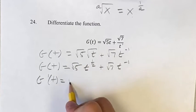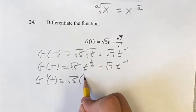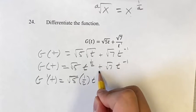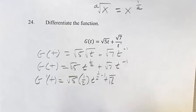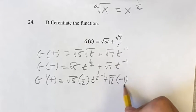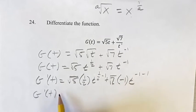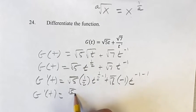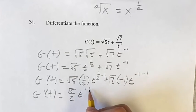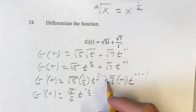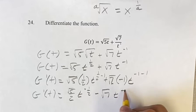Square root of 5 is just a coefficient, we leave that out front, bring the exponent down times 1 half, and the new exponent is the old one minus 1. Same thing with the second term: square root of 7, don't change that, bring the exponent down, new exponent is the old one minus 1. Simplifying: square root of 5 over 2 times t to the negative one half, minus square root of 7 times t to the negative 2.